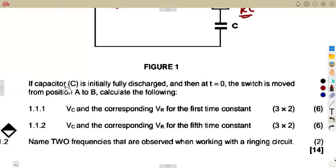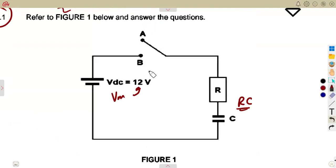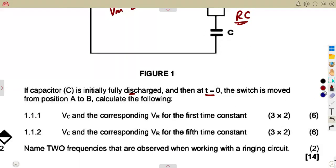They are saying if the capacitor C is initially fully discharged, and then at t equals 0, the switch is moved from position A to B. The switch is now moved from position A to B, meaning it is going to be connected like this. Initially it was discharged, but now the switch is connected, so all these calculations that we are going to have here are for the charging state. The DC voltage is now connected and it's now charging.